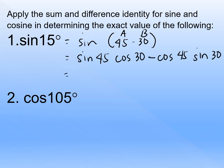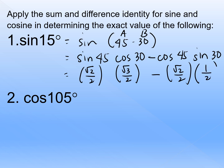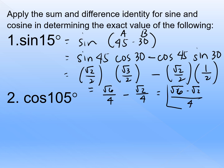We get the exact value of each trigonometric function. Sine45 is √2/2. Cosine30 is √3/2. Bring down minus. Cosine45 is √2/2. Sine30 is 1/2. Simplifying: √2 times √3 is √6, so we have √6/4. Minus √2 times 1 is √2, all over 4. Since we have the same denominator, we can rewrite this as (√6 minus √2) all over 4. This is our final answer.